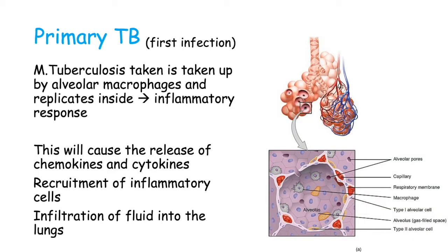Let's talk about primary tuberculosis, which describes the first infection with TB. Once you inhale Mycobacterium tuberculosis, they are taken up by alveolar macrophages. Here we have some alveolar sacs, and if we zoom in, we can see the alveolar macrophage. Unlike most bacteria, Mycobacterium tuberculosis is able to survive inside the macrophage and will start replicating inside it.